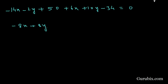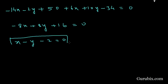Further simplifying, we have -8x + 8y + 16 equals 0. Dividing both sides by -8, we get x - y - 2 equals 0. So this is the relation between x and y when point A is equidistant from B and C. This is the solution of the example. Thank you.